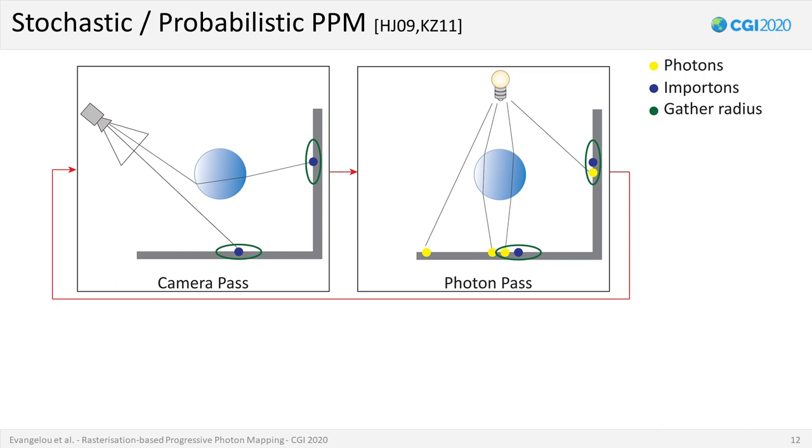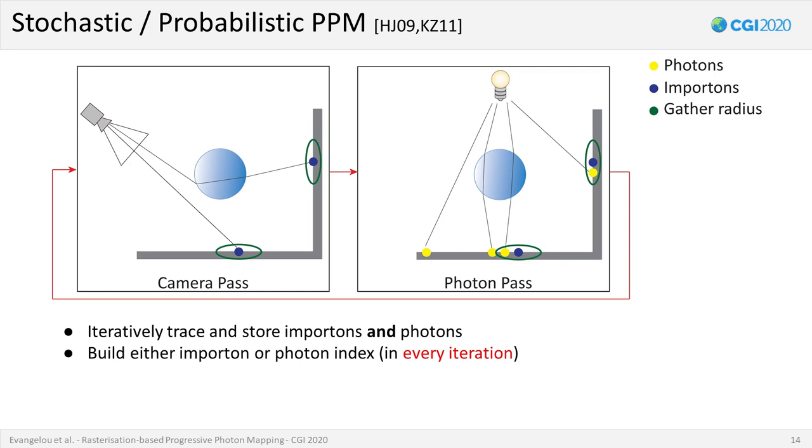This effectively reduced the variance for certain illumination effects and greatly simplified several aspects of the algorithm. Instead of relying on local statistics and importons for the construction of the gathering radius, a global rate is used for the entire scene. Additionally, the importon generation step is now also performed in an iterative fashion, allowing for a more flexible exploration of the path space by stochastically computing new importons. However, this comes at the cost of requiring either an importon or a photon index to be rebuilt per iteration to perform nearest neighbor search during photon density estimation.